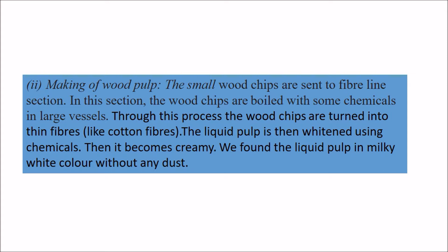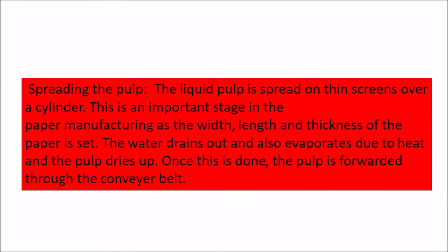The third stage is spreading the pulp. The liquid pulp is spread on thin screens over a cylinder. This is the stage where the width, length, and thickness of the paper are decided. The water is drained out or evaporated due to heat, and the pulp dries up. Once this is done, the pulp is forwarded to the conveyor belt.